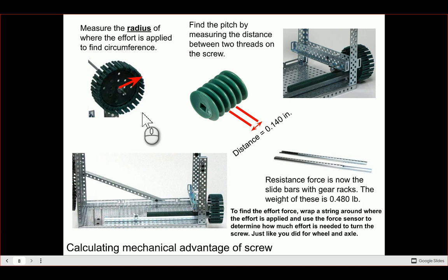Since we're not moving the normal resistance weight but instead moving the gear racks, the resistance force is 0.48 pounds — I've already provided that. You will need to find the circumference of where the effort is applied, and measure the effort force by wrapping a string around the large green wheel with spokes and using the force sensor to determine how much effort is needed to turn the screw, just like you did for the wheel and axle.